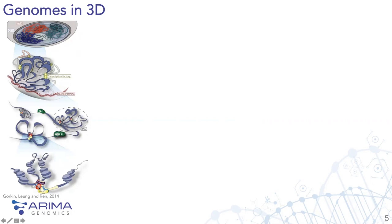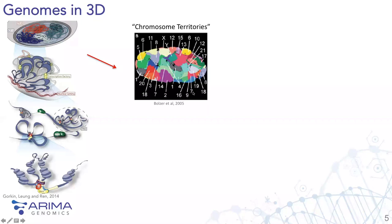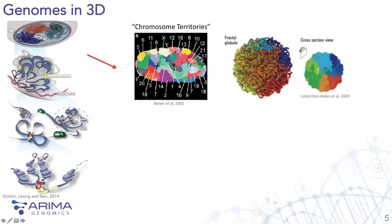Orthogonal evidence for these structures comes from microscopy studies, where researchers have painted chromosomes different colors, confirming chromosome territories — each chromosome is self-interacting. The only time a chromosome interacts with another during interphase is really at the periphery along its surface; most of it is highly self-interactive. This can be modeled as a fractal globule, and a cross-section through this model shows chromosomes occupying their own space.